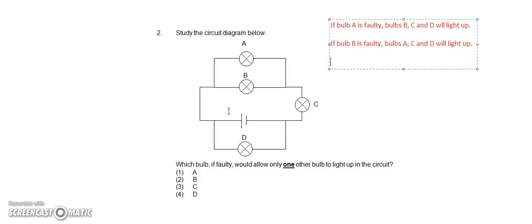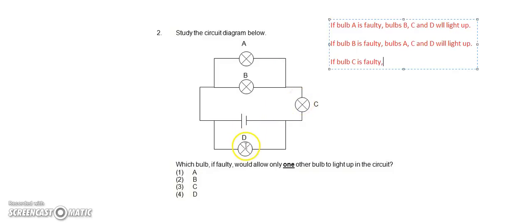What happens if bulb C is faulty? If bulb C is faulty, let's take a look at the diagram. The current will still be able to pass through D, but when the current is passing through B it will not be a closed circuit anymore. The same goes for A — the current will not be able to pass through C. So only bulb D will light up, and bulbs A and B will not light up.